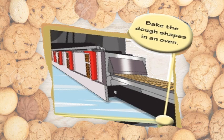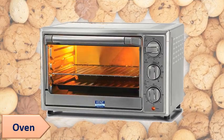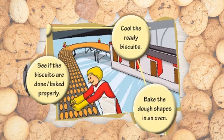Then bake the dough shapes in an oven. You know what an oven is — it is a machine in which temperature is maintained. This is a small oven useful for home, not for the factory. In the oven the temperature is maintained, so the biscuits bake and become crispy. See here — bake the dough shapes in an oven. When they come out from the oven, check if the biscuits are done, baked properly, smooth, or if it is necessary to bake more.